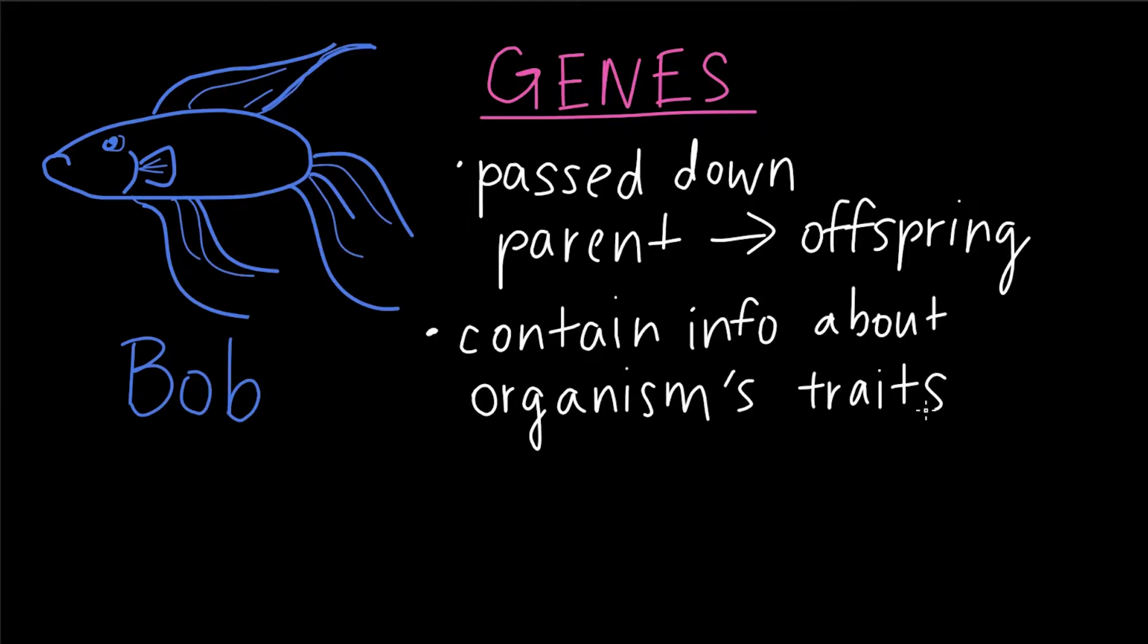It would only make sense that since Bob is a blue-colored fish, he must have a parent or ancestor who is also blue-colored. Now, a single kind of gene can have many different versions, and we call these versions alleles. These are just different variations of a single gene.